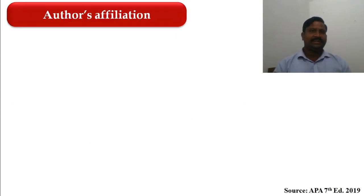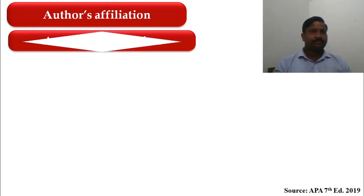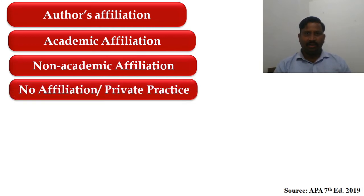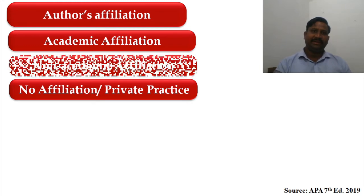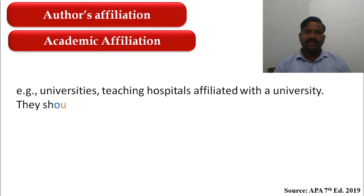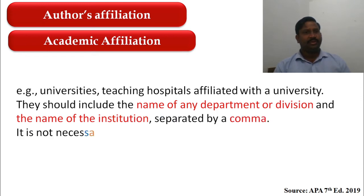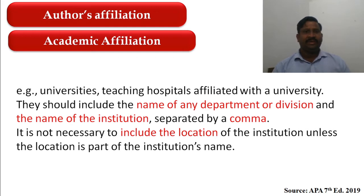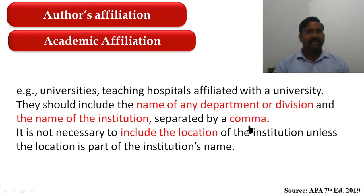Author affiliation may be academic, non-academic, no affiliation, or private practice. For academic affiliation — such as universities or teaching hospitals affiliated with a university — include the name of the department or division, then the name of the institution, separated by a comma. There is no need to mention the location.